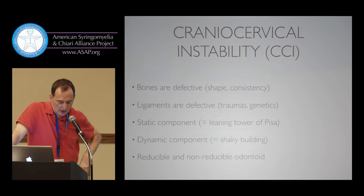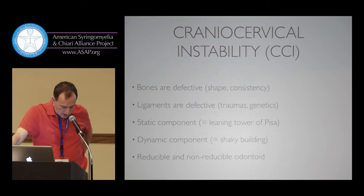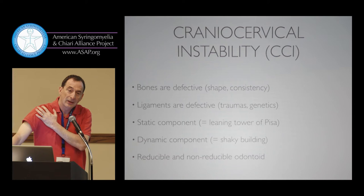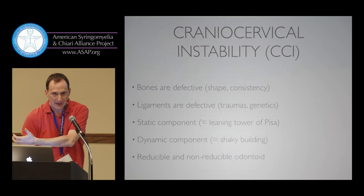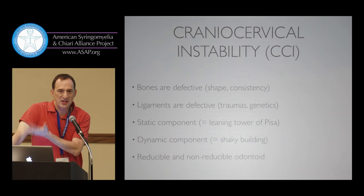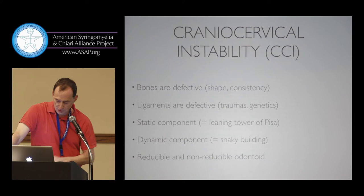The odontoid can be reducible and non-reducible — terminology created by Dr. Menezes a long time ago. Like my shoulder example, the odontoid can be in a normal position but wobbly, and the doctor can put it back — reducible. Or the odontoid is stuck in a bad position — non-reducible — and at that point you have to do something more.